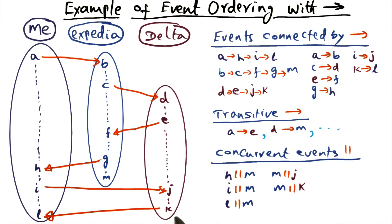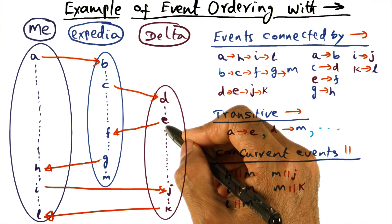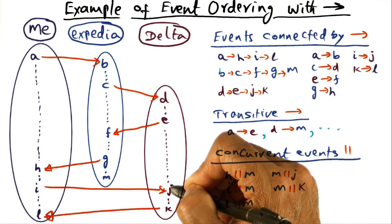And similarly, all the events that you're seeing over here, they're concurrent with M. So in fact, after this, if you look at the Delta process,